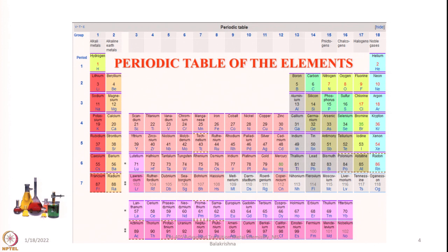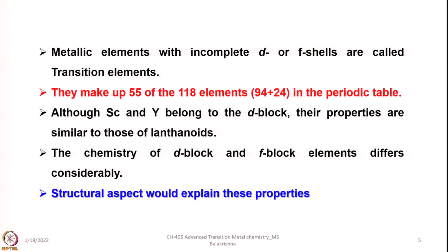I give more emphasis to at least remembering 30 elements in the periodic table and writing their electronic configurations. When we talk about transition elements or metallic elements, they have incomplete D or F shells. Any metallic element that has incomplete D or F shells is called a transition element.